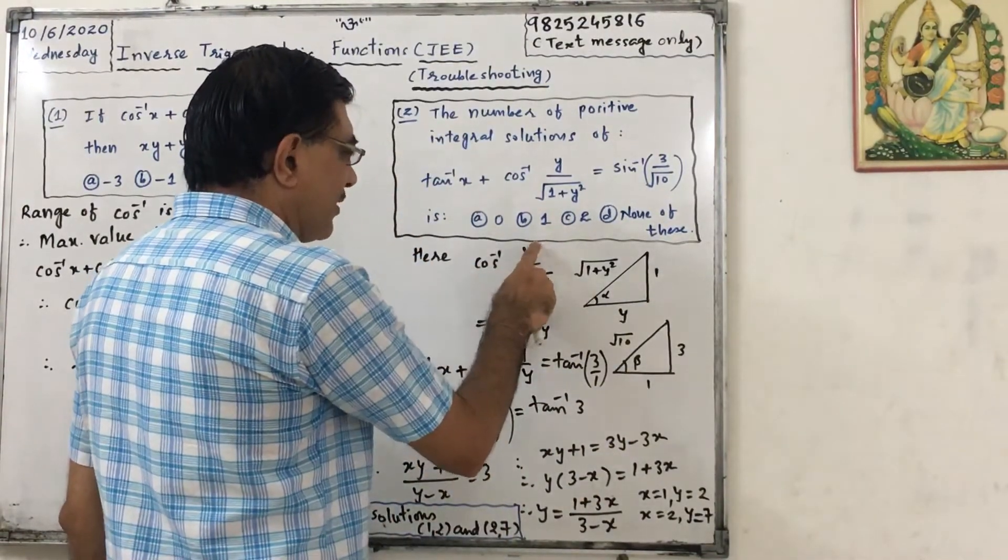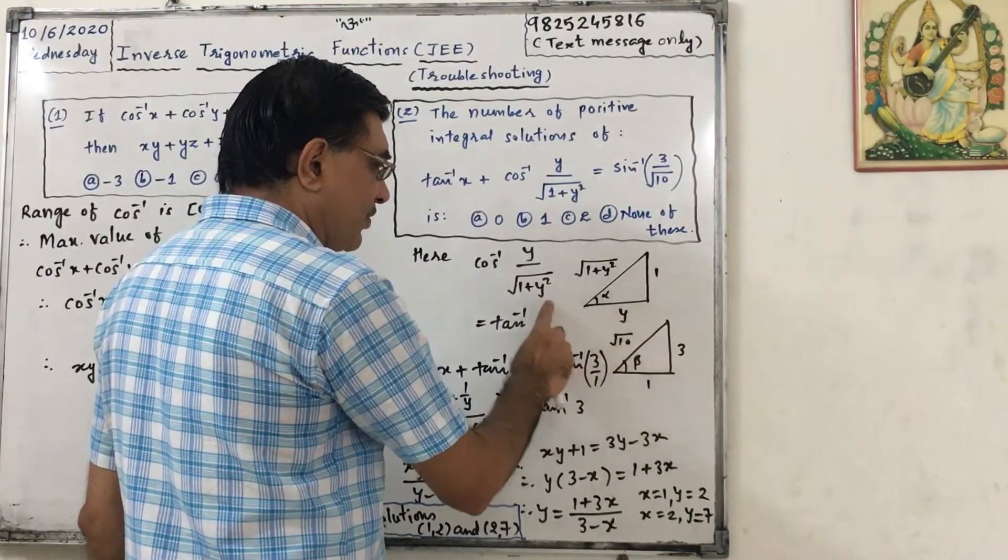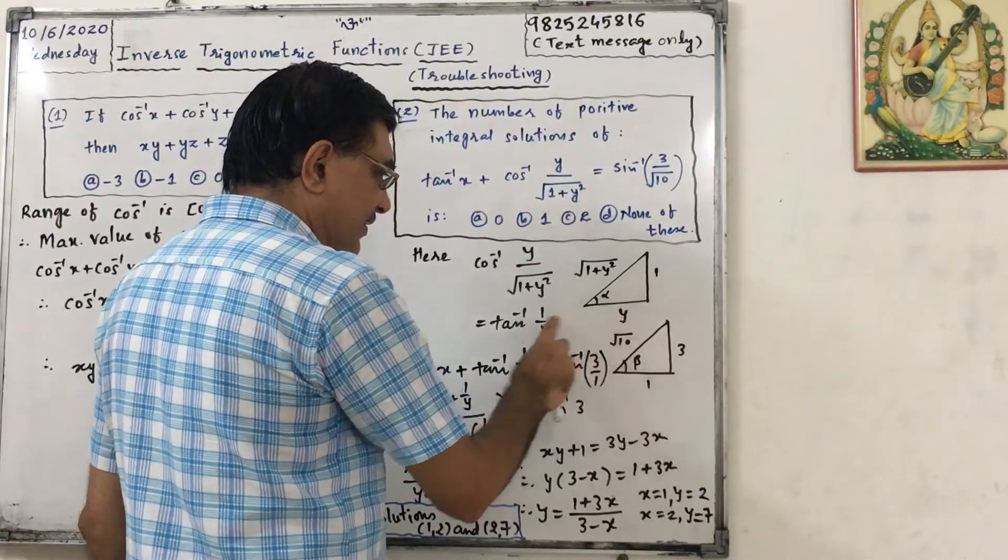So cos inverse of y upon square root of 1 plus y square can be written as tan inverse of 1 upon y. Opposite side upon adjacent side.